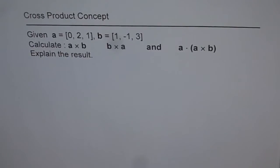Cross-product concepts. Given vector A equals 0, 2, 1, vector B equals 1, -1, 3. Calculate A cross B, B cross A and A dot A cross B. Explain the results.